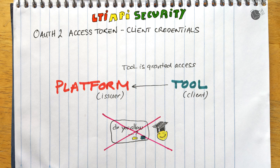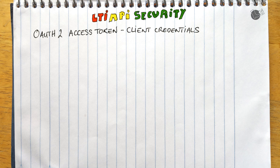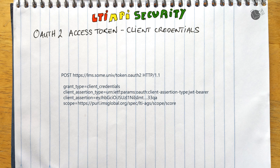How does the tool get the token? It asks for a token using the token endpoint exposed by the platform, and that token endpoint is communicated to the tool during registration. To authenticate itself and express what it wants to use the token for, LTI uses a JWT profile for authentication.